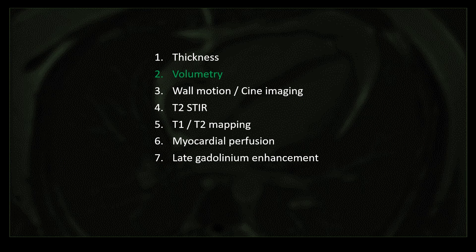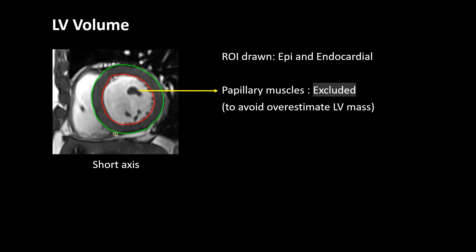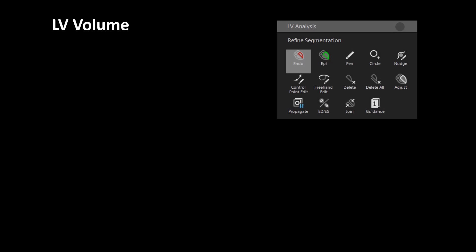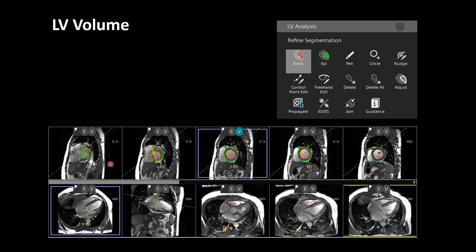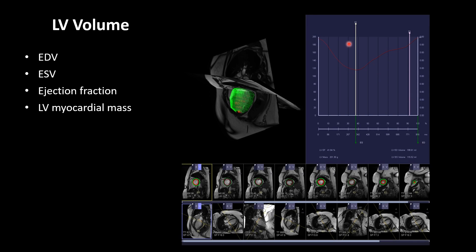Now coming to volumetrics. For this we need to draw ROI, or region of interest, over the endocardial and epicardial surface of the LV wall. The papillary muscles should be excluded to avoid overestimation of the LV mass. You draw ROIs on each segment, and if you are using SINGO, these are the tools used to draw the ROIs. Then you get a graph which gives you the end diastolic volume, end systolic volume, ejection fraction, and myocardial mass.